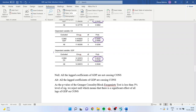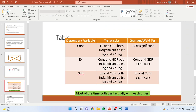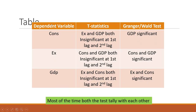You can summarize these results in a table. The dependent variables are consumption, export, and GDP. The t-statistics show that export and GDP are both insignificant at first and second lags according to the first causality test — all were insignificant. But in the second causality test, GDP was significant for consumption, and lags of consumption and GDP were affecting exports, while lags of export and consumption were affecting GDP. Most of the time they tally with each other.